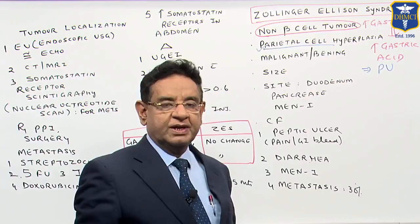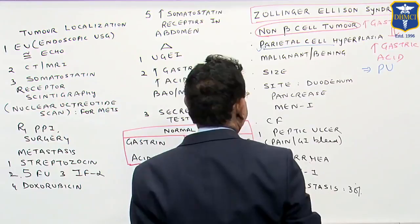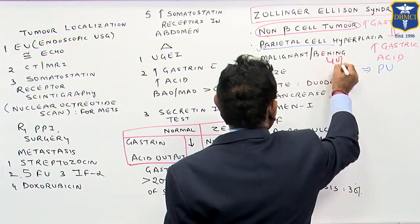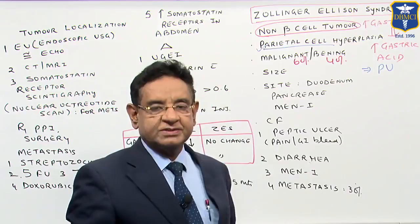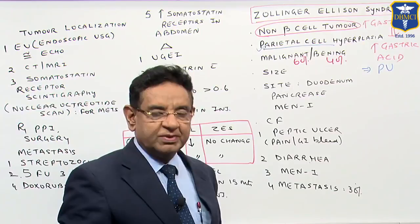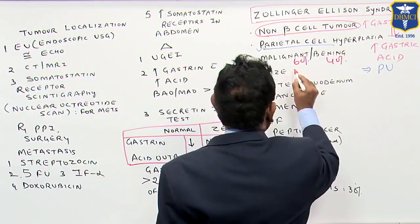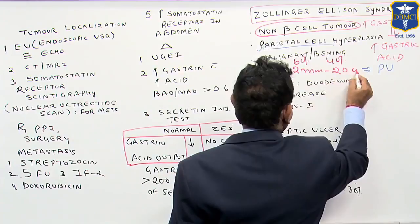Regarding the pathology, this is one tumour which can be both benign and malignant. It is benign in around 40 percent of cases and malignant in around 60 percent of cases. One more hallmark of the tumour is its highly variable size — the size may be as low as 2 millimeters to 20 centimeters.